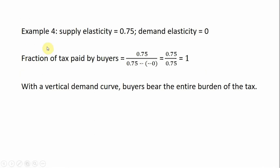Example four — another extreme. Here we have a supply elasticity of 0.75 and the price elasticity of demand of zero. In this example we have a vertical demand curve, or a perfectly inelastic demand curve. Plugging these results into the formula, we see that consumers will pick up all the tax in the form of higher prices. With a vertical demand curve, buyers bear the entire burden of the tax. For example, if there was a $3 tax placed in this market, buyers would be paying exactly $3 more for the good.